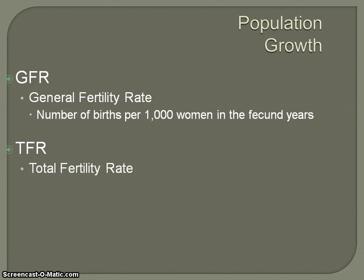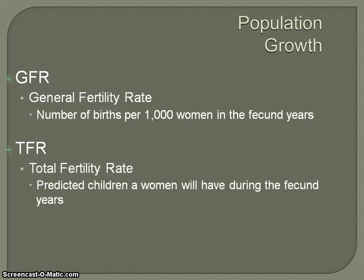That's per 1,000 women in the population, so this is the statistical number that is calculated every year. Total fertility rate is more along the lines of a prediction: if a woman were to live out her entire 30 years of childbearing in a particular country, how many children would she most likely have?